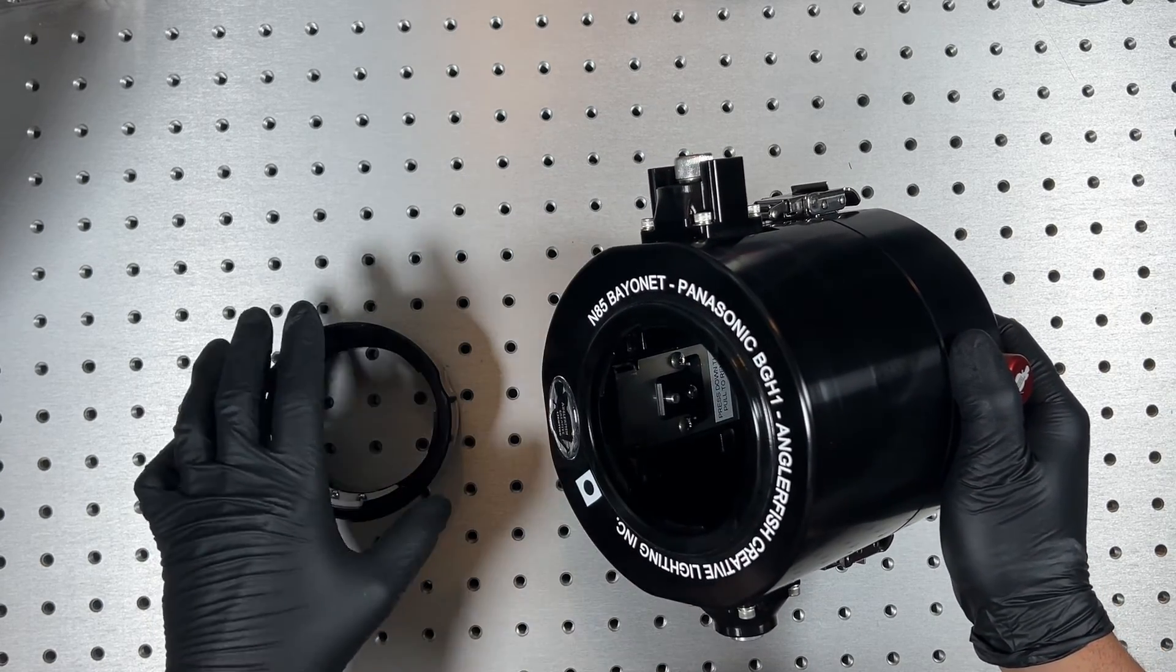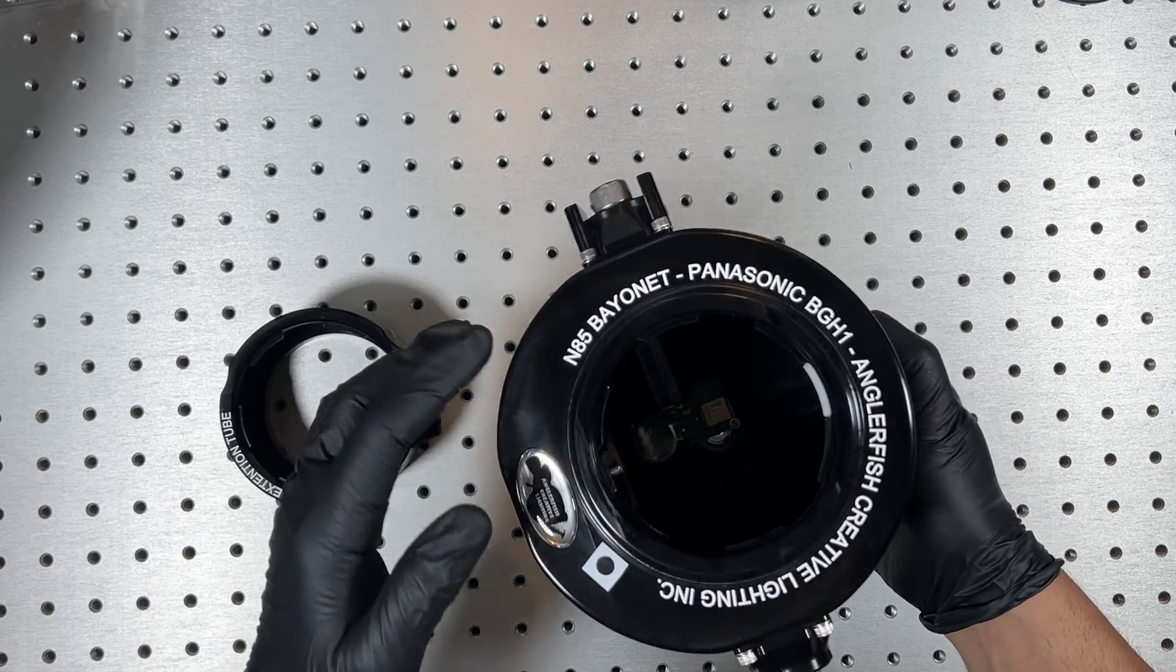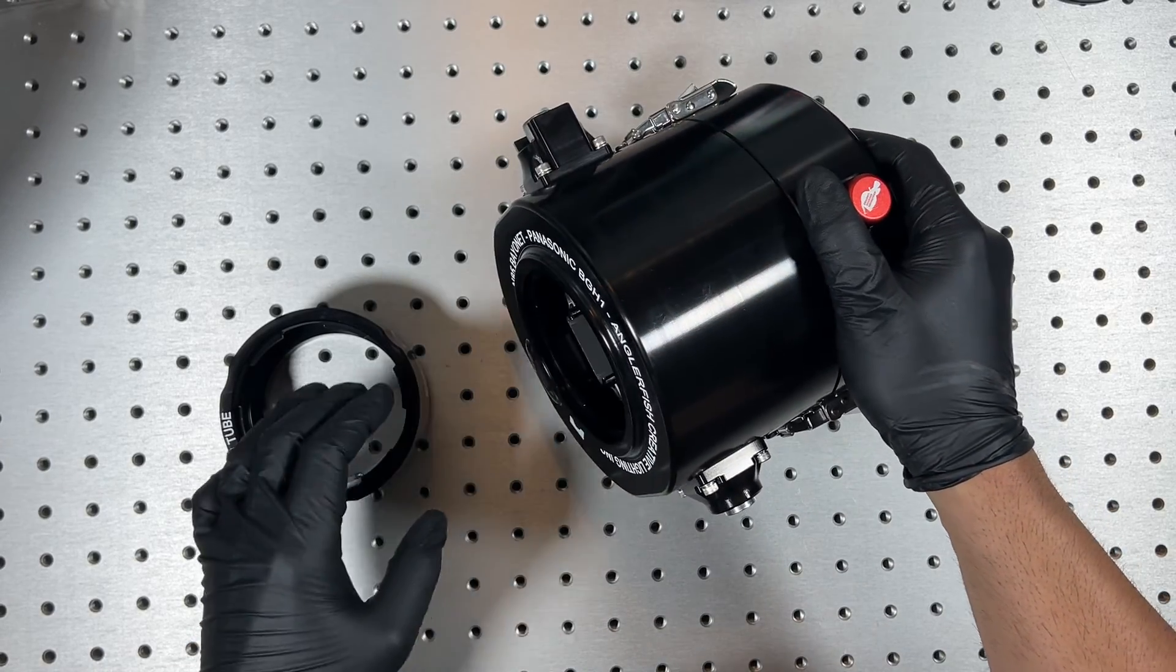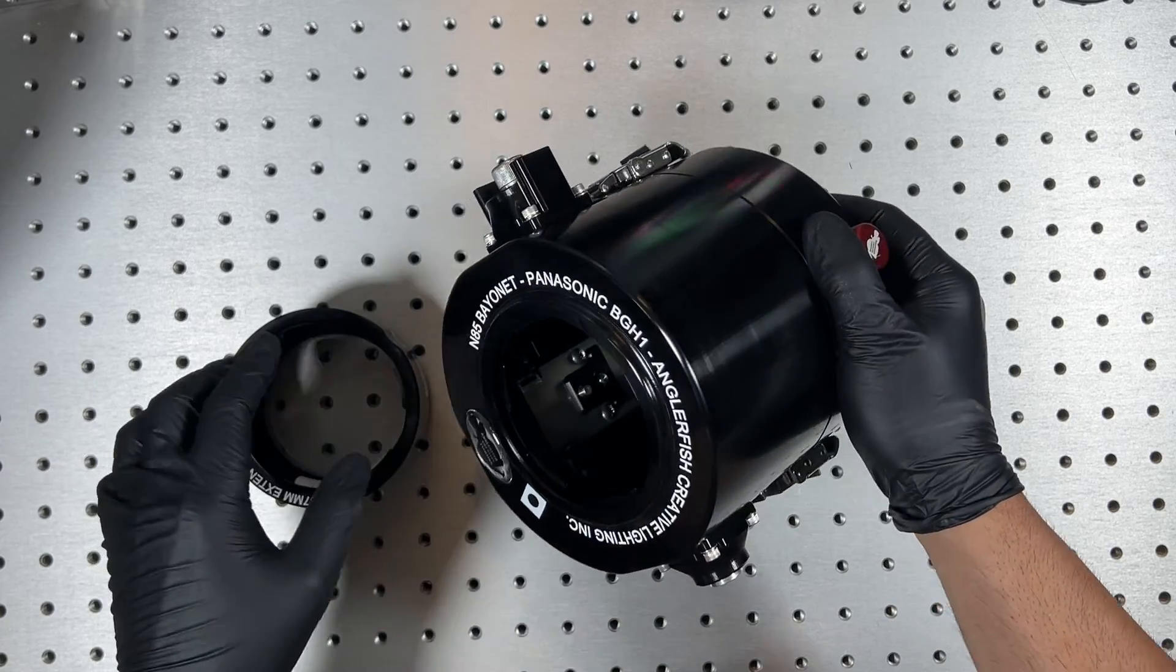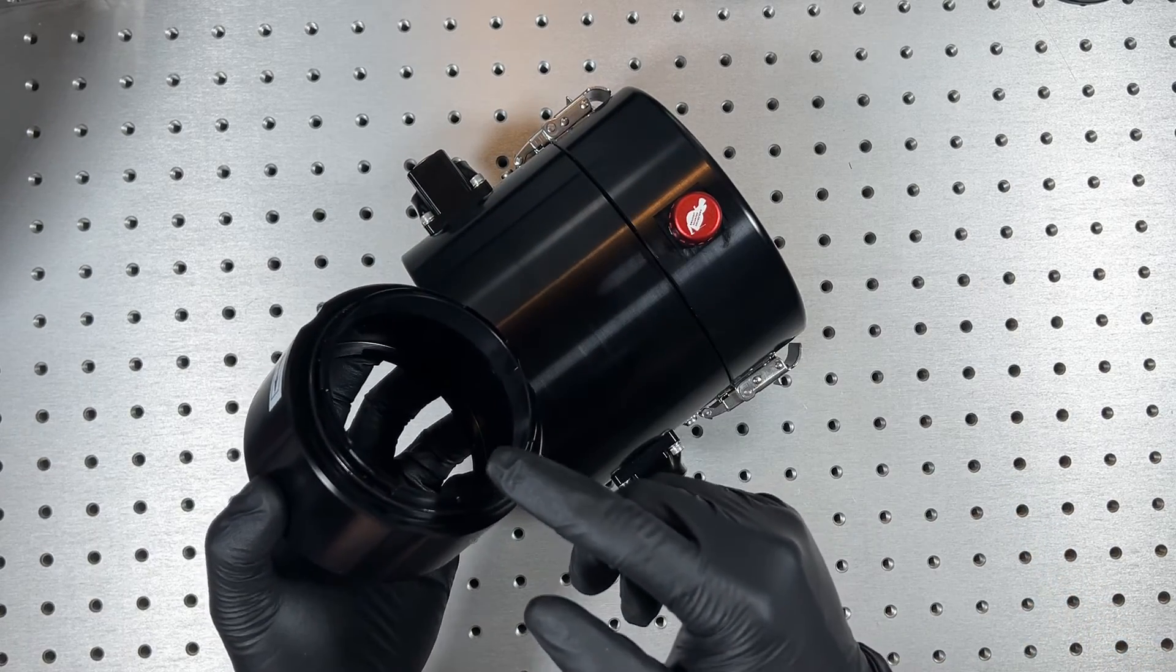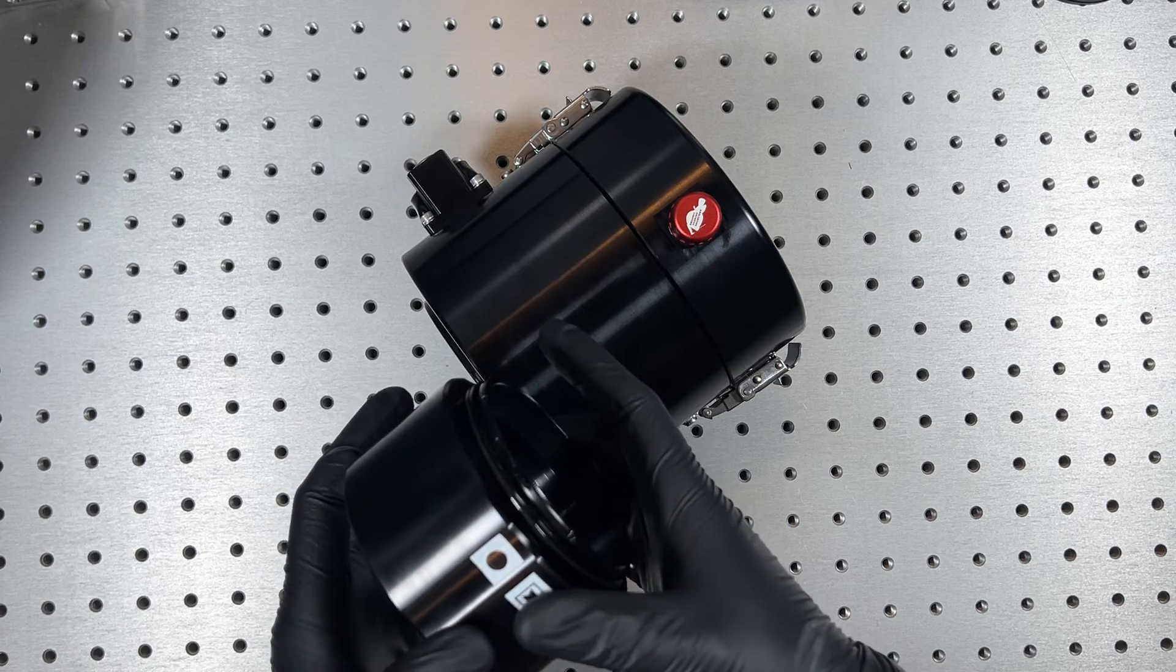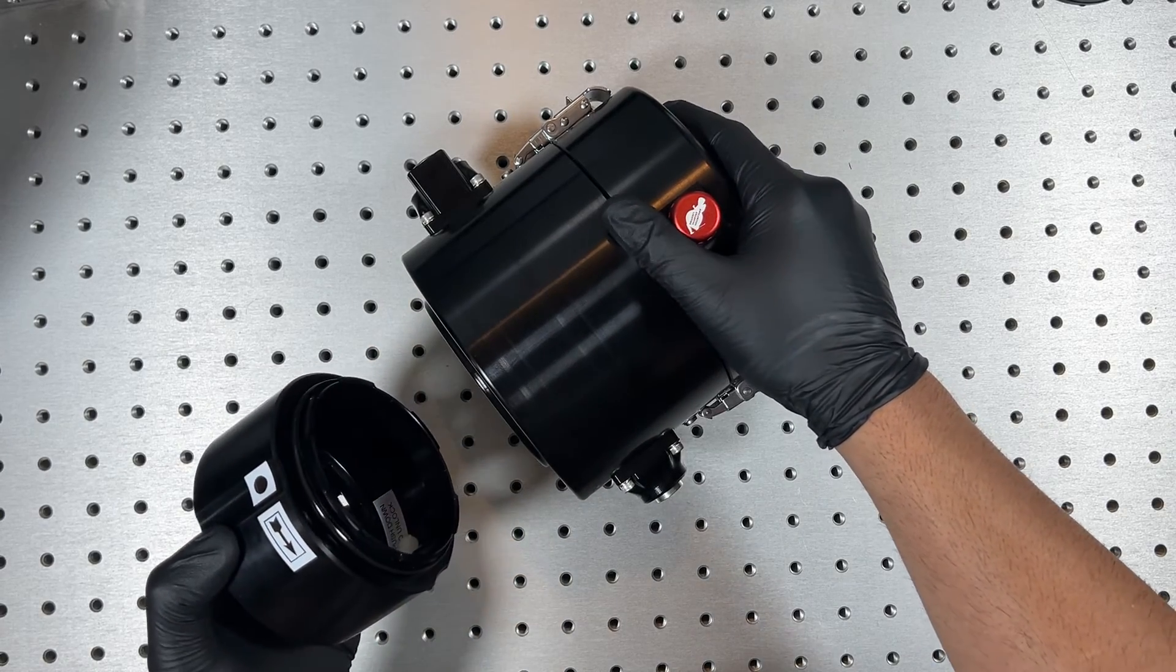The housing and the extension tubes have a locking mechanism for the bayonet. There is a flange pattern on the housing bayonet and the flange pattern on the extension tubes and the ports. These need to be aligned correctly and rotated in place in order to lock.